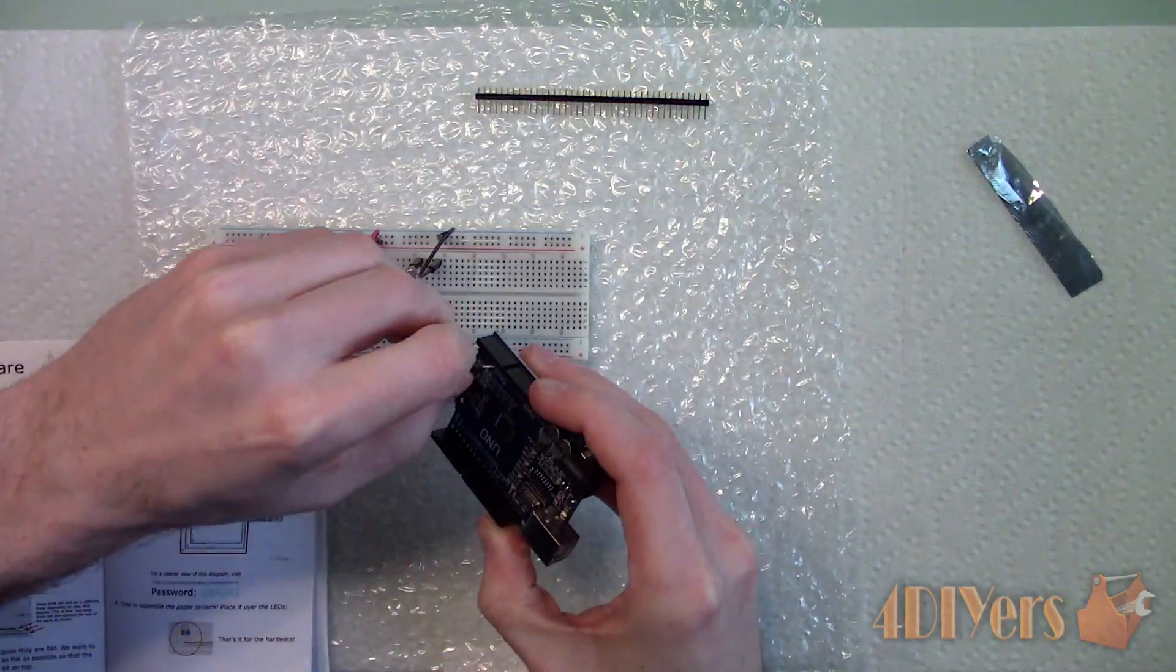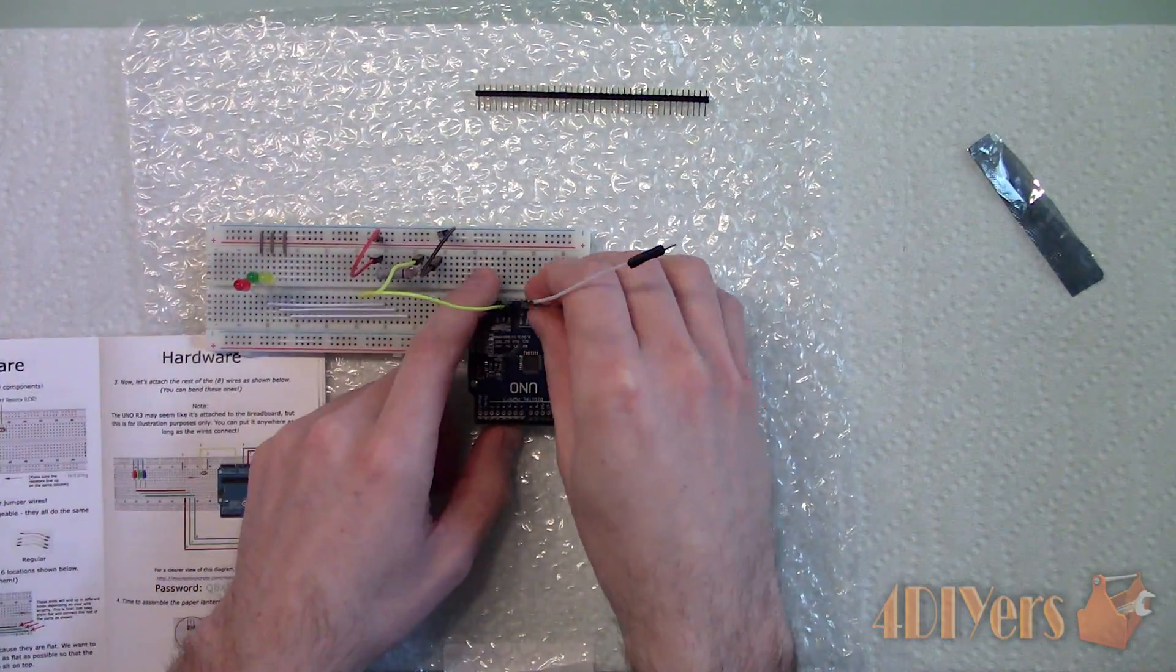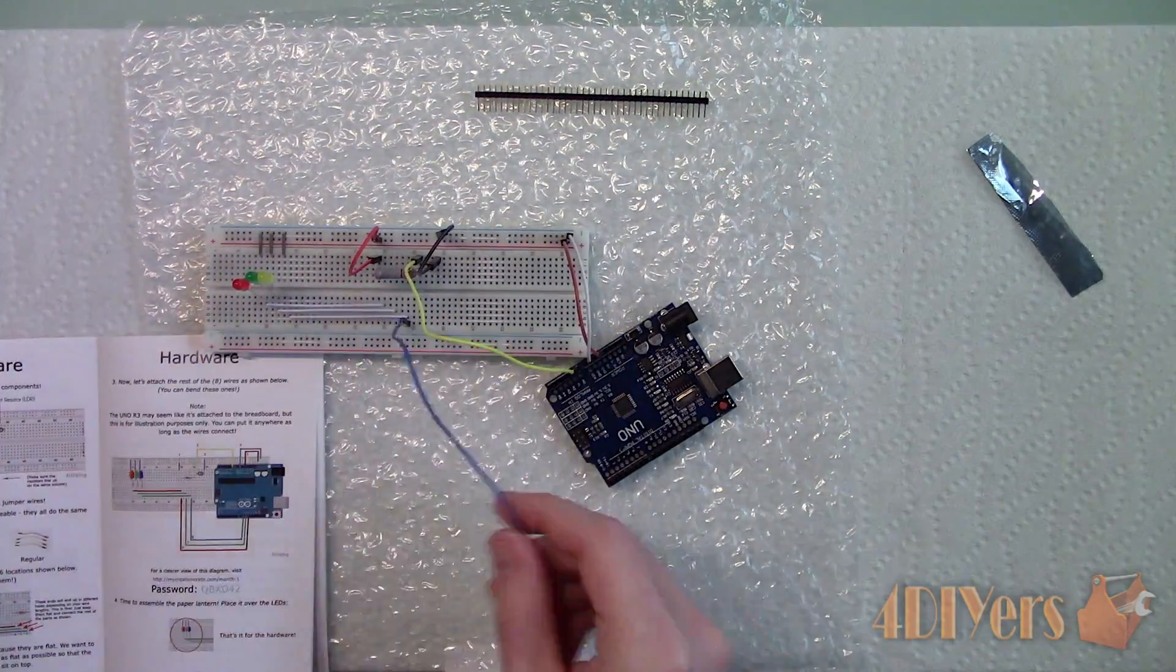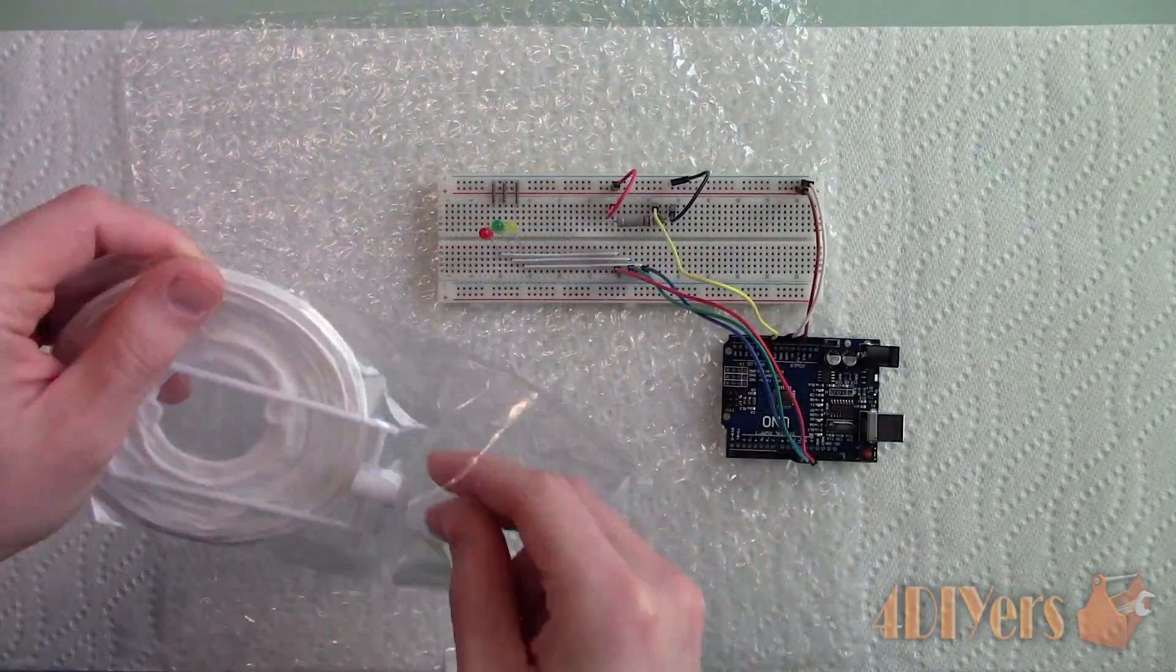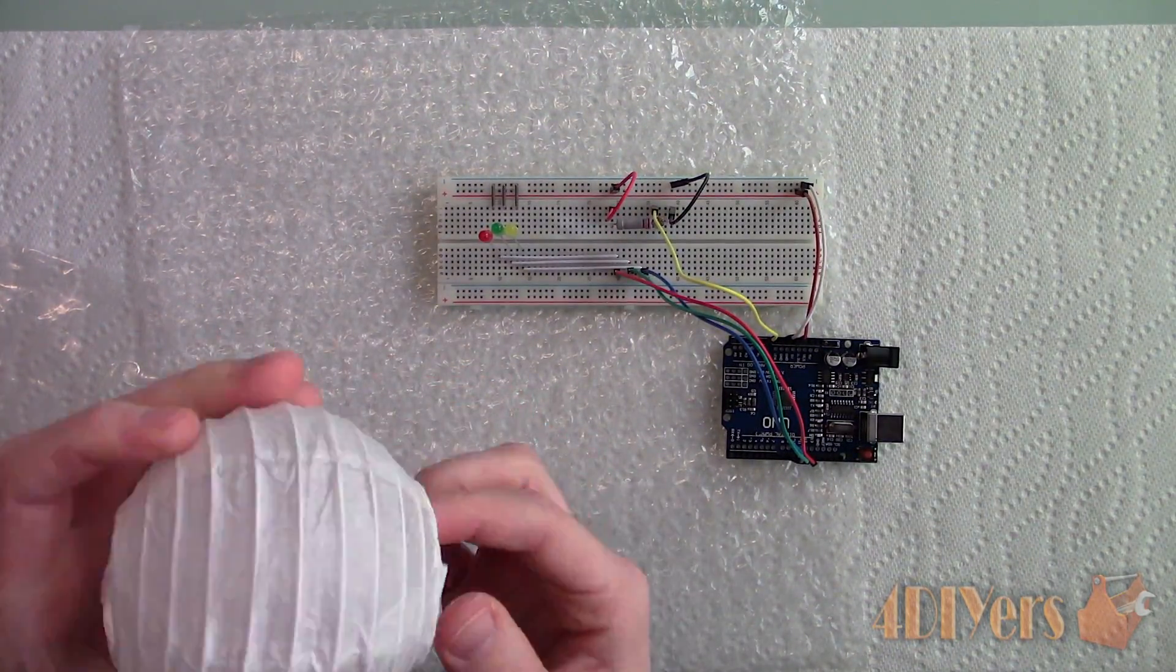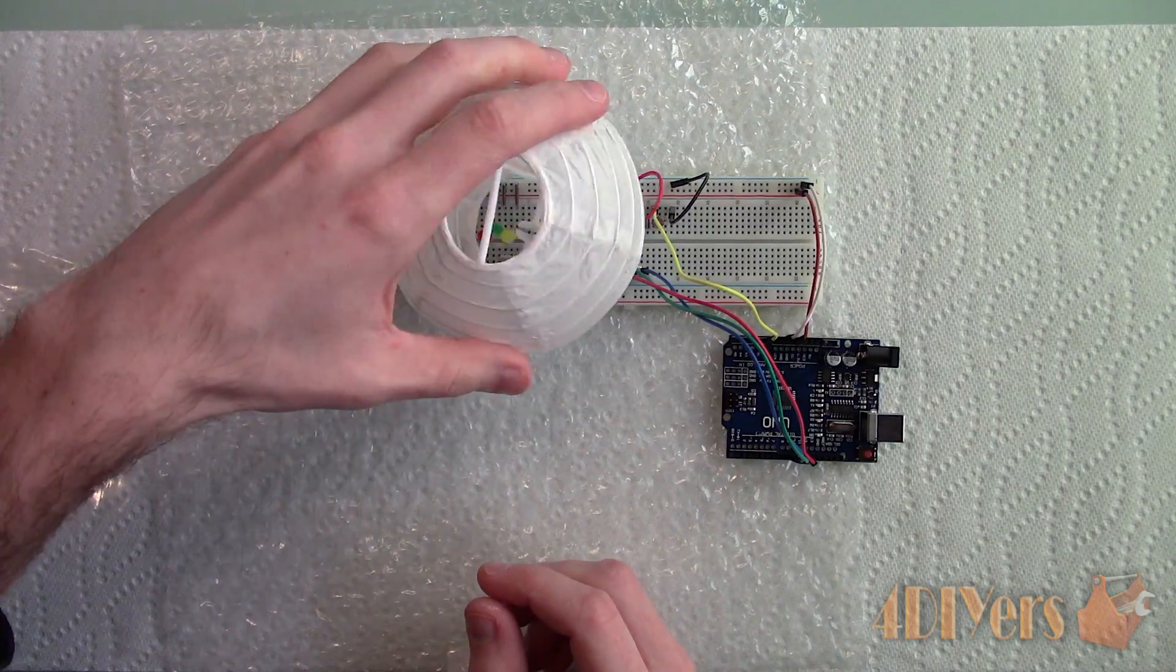We can work on installing the longer jumper wires which goes to the corresponding terminals on the circuit board. One step left for assembly. Expand the Chinese lantern and install the plastic brace inside. Then place it over the LEDs.